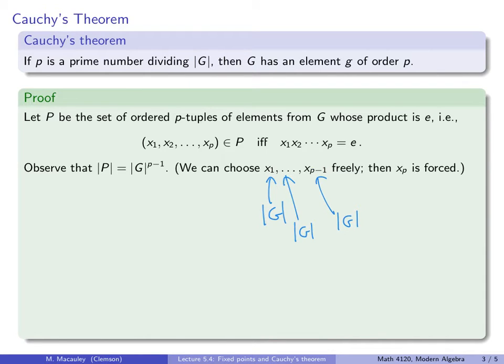So this is how many choices, |G|^(p-1), we have for the first p-1 entries. And then the last one is forced. And it should be clear why it's forced, and also why there always is one, because xₚ is just the inverse of the product of these.